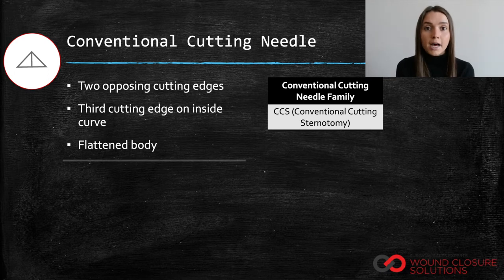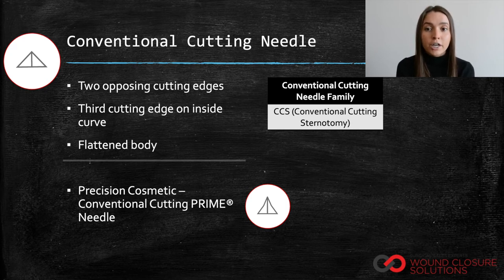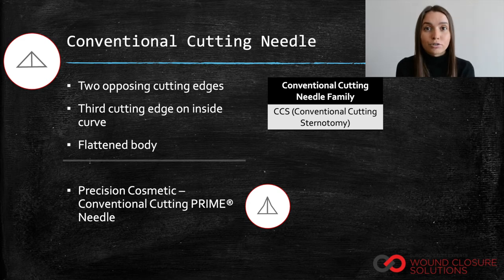There is one subtype of conventional cutting needles: precision cosmetic conventional cutting prime needles. These needles have conventional cutting tips and prime geometry, which is an exclusive needle design that improves penetration and control with less tissue trauma. These needles are typically indicated for delicate plastic or cosmetic surgery.